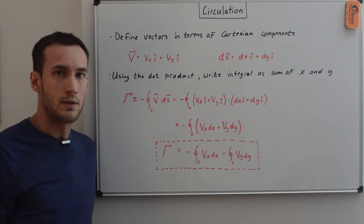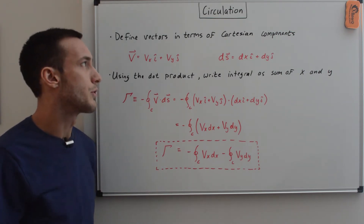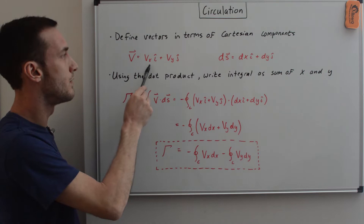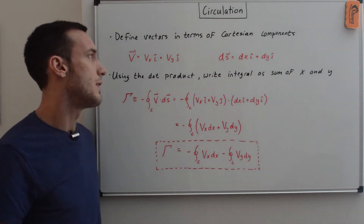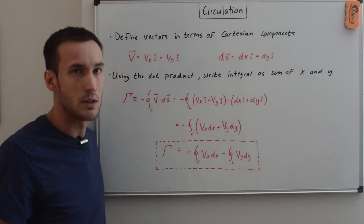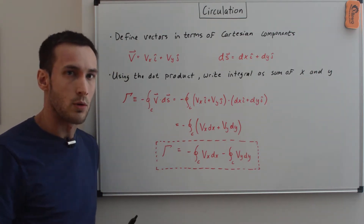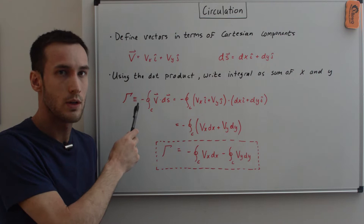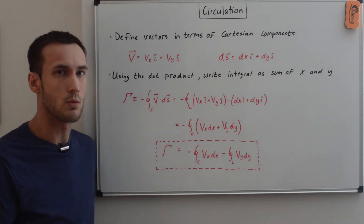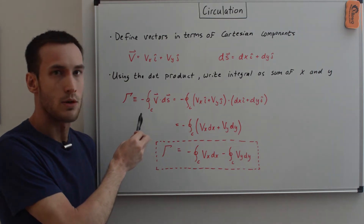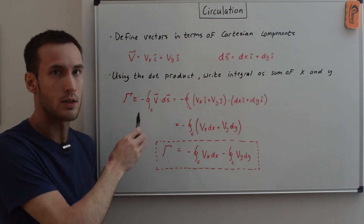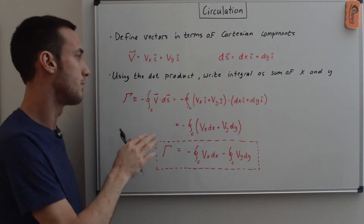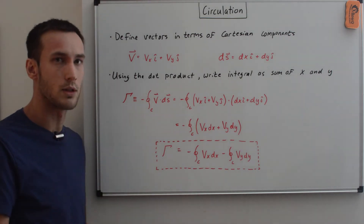Next we define the velocity vector and contour vector in terms of their Cartesian components. The velocity vector is Vx i-hat plus Vy j-hat, and the contour vector DS equals dx i-hat plus dy j-hat. One important note: there is a negative sign in front of the integral in our circulation equation for aerodynamics, whereas most calculus textbooks won't include it. The negative is useful here so you don't have to negate the full term in the lift per unit span equation.